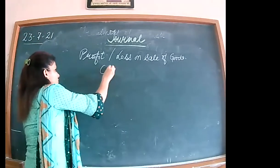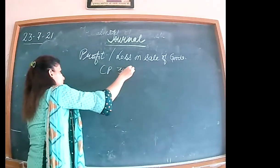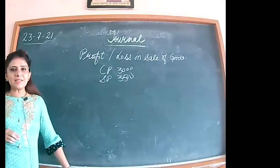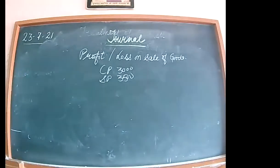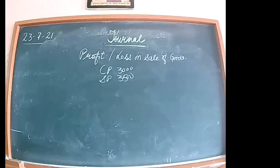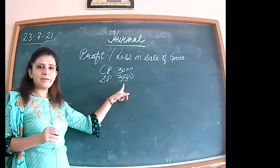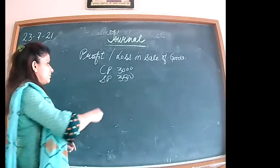For example, the cost price of the goods was Rs. 3,000 and the selling price is Rs. 3,500. Profit is a question of your accounting equation, so you raise the profit and add it to capital. But when the question is of journal entries, we will always pass the journal entry with the selling price.